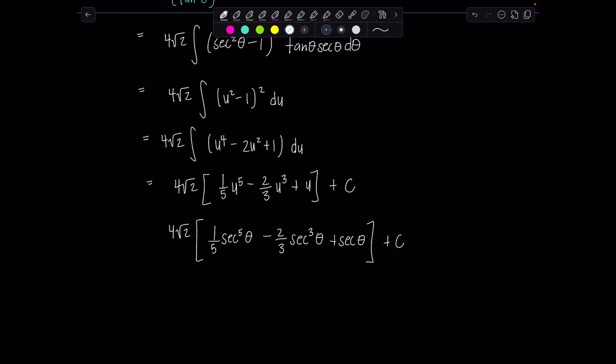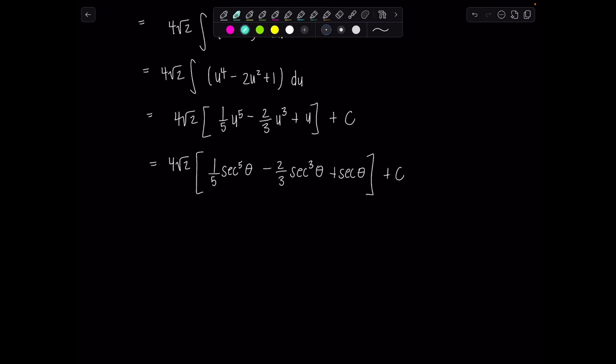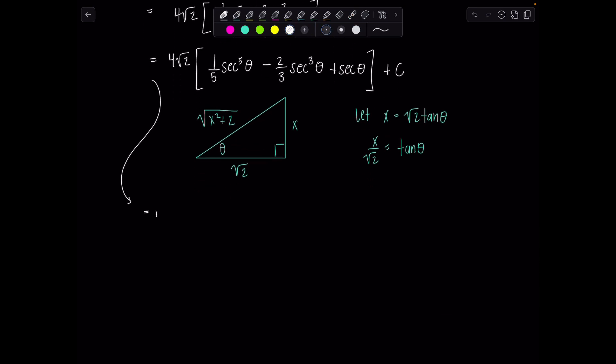And don't get too excited. It's not time to box it yet because the original problem was in terms of x, not theta. So how do we get back to x's? It's triangle time. So remember we made the substitution. We let x equal the square root of two tan theta. Isolate the trig function. So that means x over the square root of two is tan theta. So now we're going to draw a triangle in which tangent of the angle theta has the ratio x over square root of two, opposite over adjacent. Now find the missing side. The hypotenuse is going to be square root of x squared plus two. And then using this triangle now, I can find secant theta in terms of x. So we're almost done.